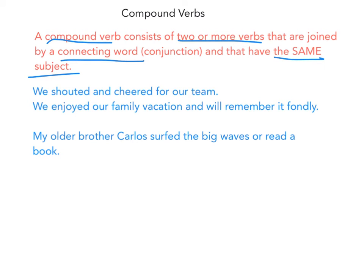Let's look at our examples. 'We shouted and cheered for our team.' I know that 'shouted' and 'cheered' are actions, so they are verbs. They are joined by the conjunction 'and,' and they share the same subject.